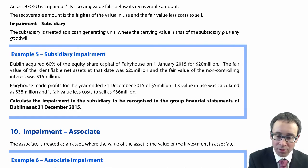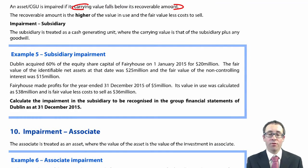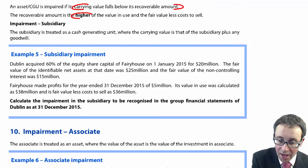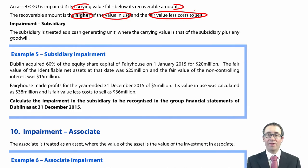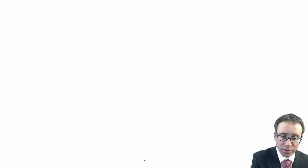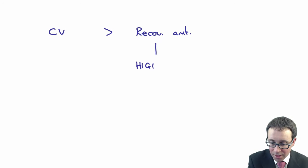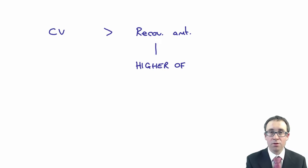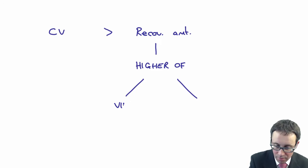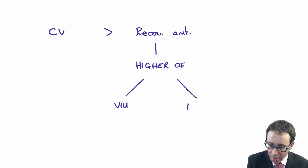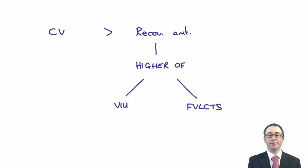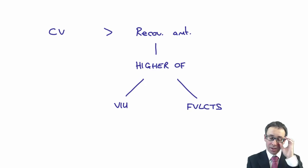Remember, an asset or a cash generating unit was impaired if the carrying value was above the recoverable amount. The recoverable amount was the higher of the value in use and the fair value less cost to sell. So essentially, if the carrying value is greater than the recoverable amount — which is the best alternative use you could get from the asset, either to use it (value in use) or to sell it (fair value less cost to sell) — then you have an impairment.